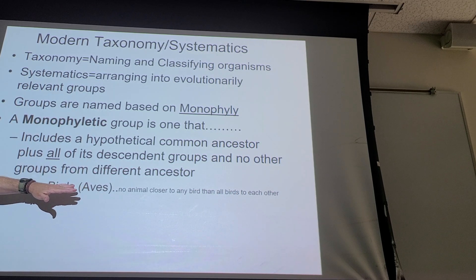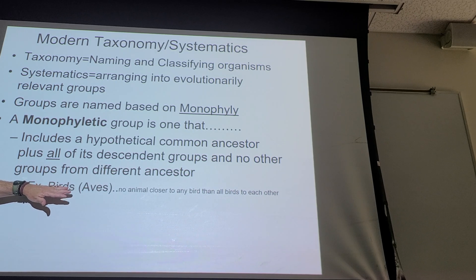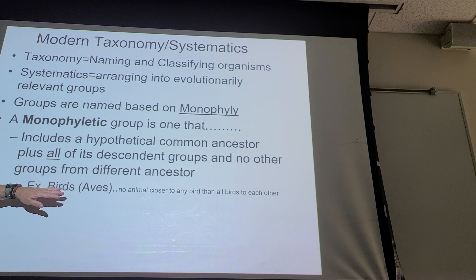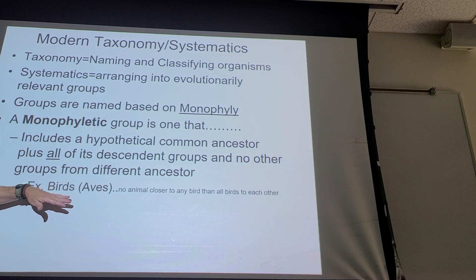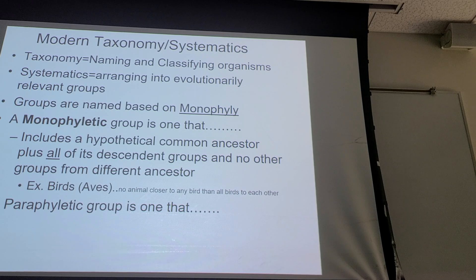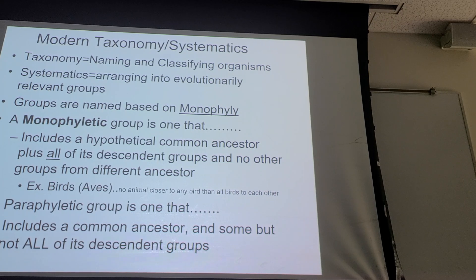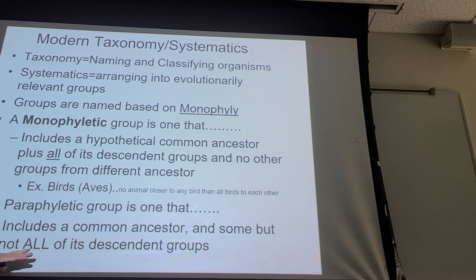We can divide that more specifically into different orders — Passeriformes, Pelecaniformes, for example. Those are all birds, but represent a smaller group that evolved from a common ancestor after the first bird. A monophyletic group is common ancestor plus all descendant groups. A paraphyletic group is one that's not monophyletic — it includes a common ancestor and some of the descendants, but not all of them, leaving some out.